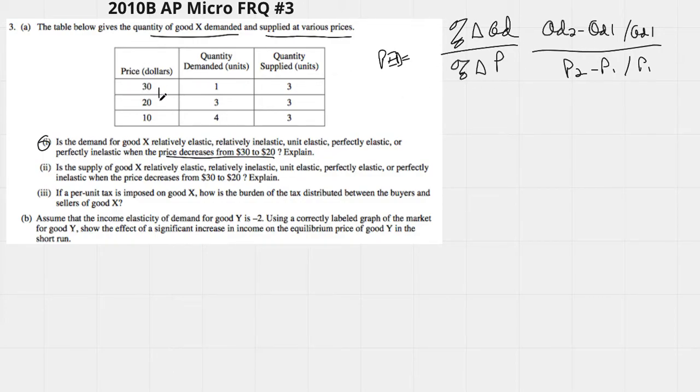We started at 30. We went to 20. So this price was P1. This was P2. Our quantity demand 1 and our quantity demand 2.